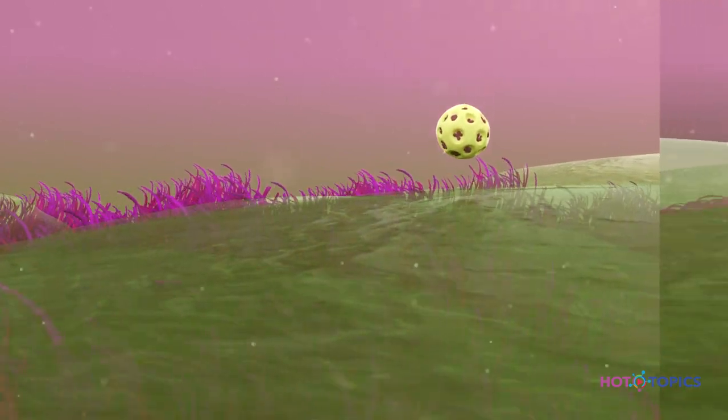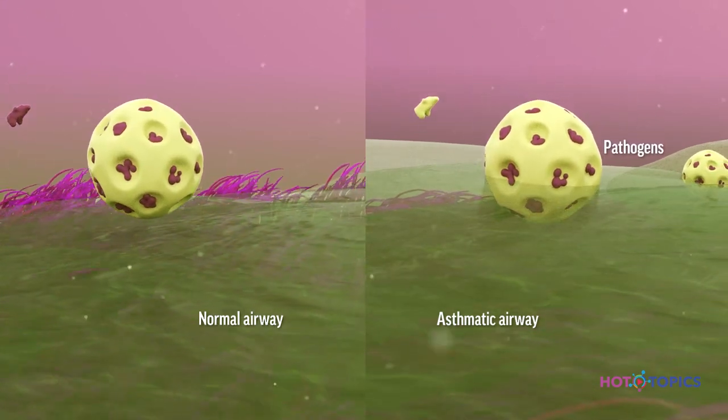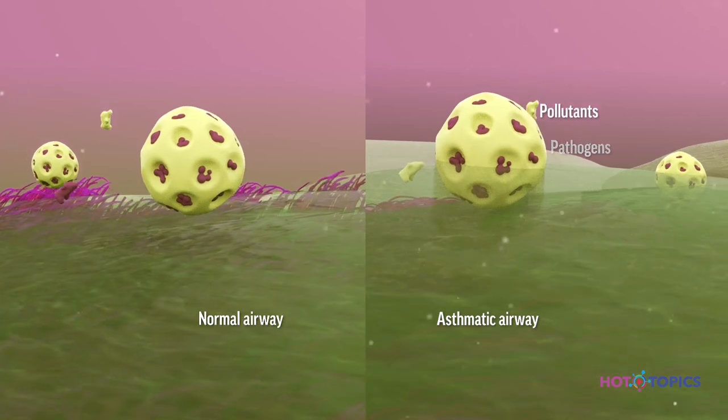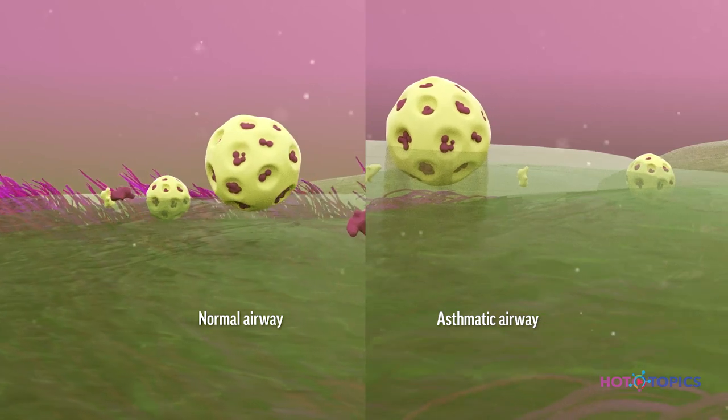Airway mucus is essential to trap inhaled pathogens and particles, acting as a component of epithelial host defense mechanisms. In healthy individuals, airway mucus is easily propelled upward by the beating of cilia to be cleared from the lungs.